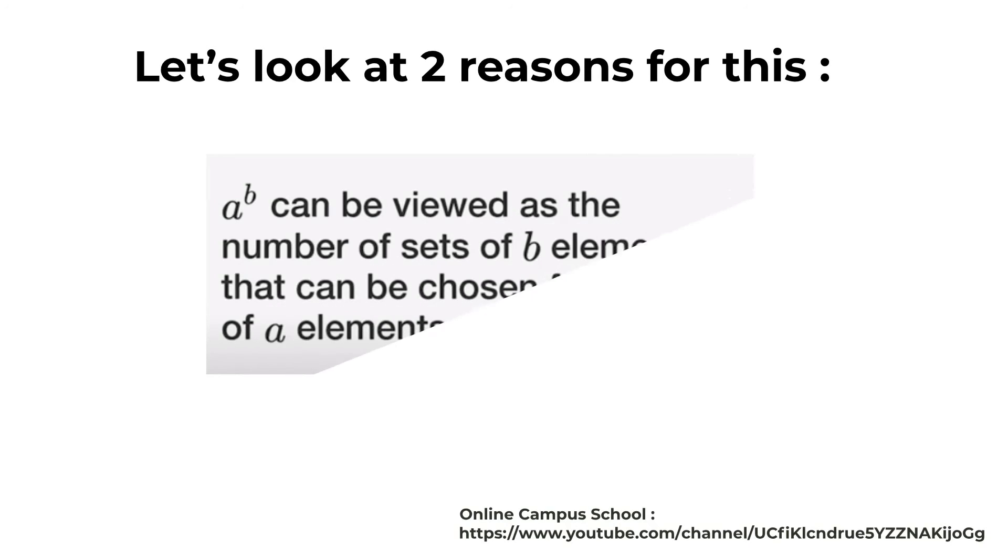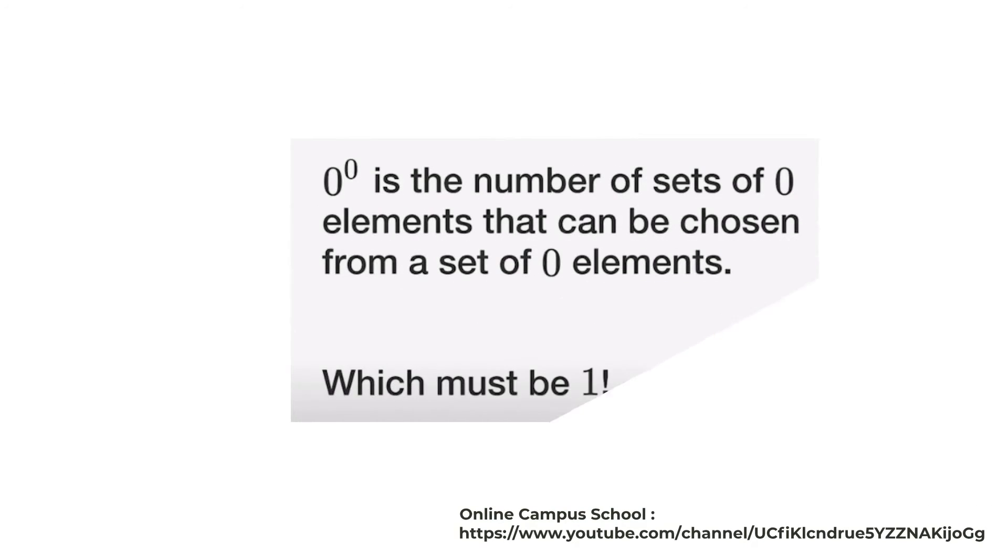So let's look at two reasons for this. a to the power of b can be viewed as the number of sets of b elements that can be chosen from a set of a elements. So zero to the power of zero is the number of sets of zero elements that can be chosen from a set of zero elements, which must be one.